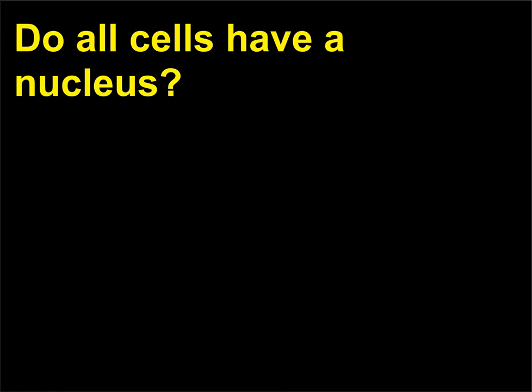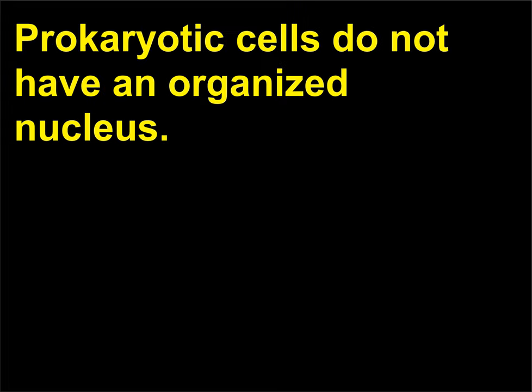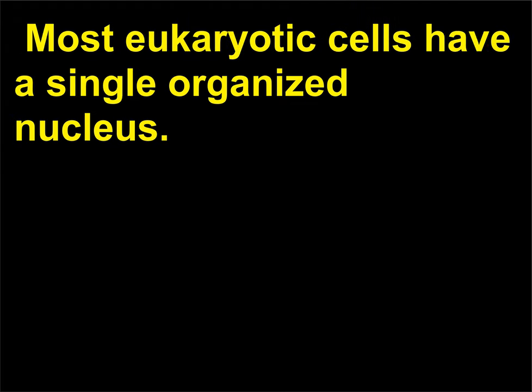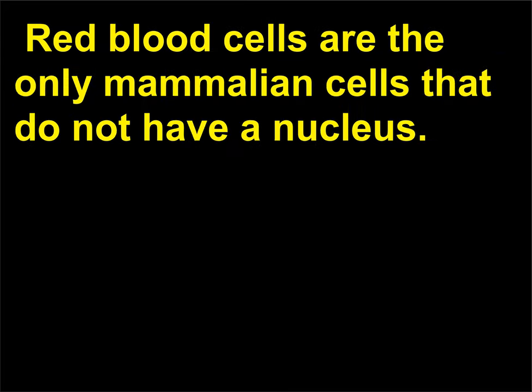Do all cells have a nucleus? Prokaryotic cells do not have an organized nucleus. Most eukaryotic cells have a single organized nucleus. Red blood cells are the only mammalian cells that do not have a nucleus.